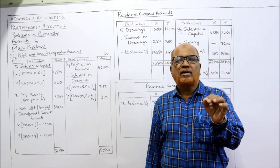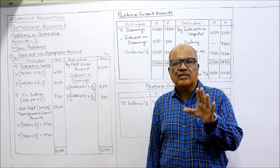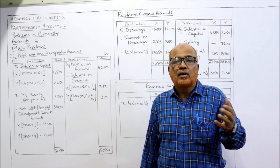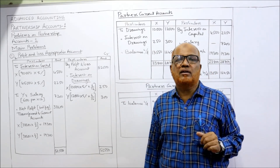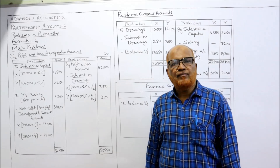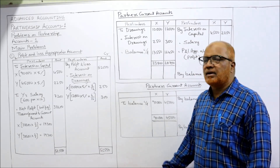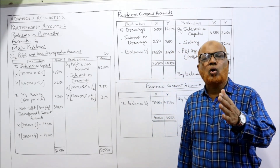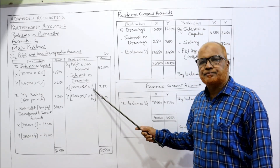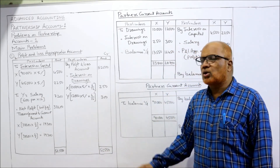Now, interest on drawings — it is not given when the drawings are made. In the theory video I explained three situations: if nothing is mentioned about what date the drawings are made by the partner, we assume drawings are made in the middle of the year — the center of the year. That is why we calculate interest on drawings for half a year, meaning 6 months, or 6/12. Many students have doubts about why we calculate interest on capital for the full year but interest on drawings for only half a year.